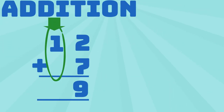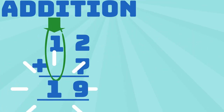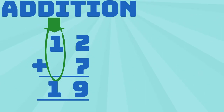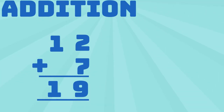That means 1 plus 0 equals 1. Therefore, 12 plus 7 equals 19.